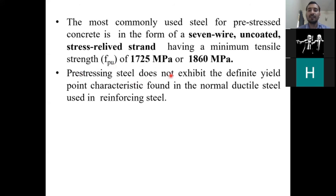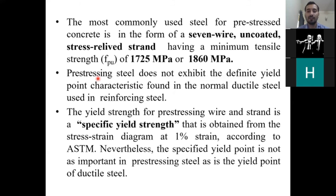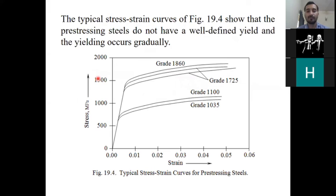Pre-stressing steel does not exhibit the definite yield point characteristics found in normal ductile steel used for reinforcement. What this means is that when you use pre-stress steel, your yield strength is not definite — you do not know exactly what the yield strength will be. For example, this is your pre-stress steel wire of grade 1035.